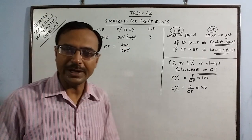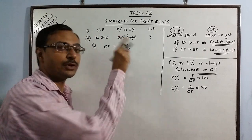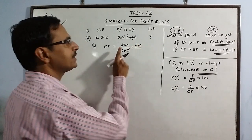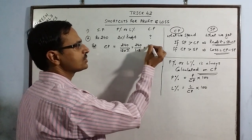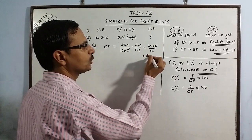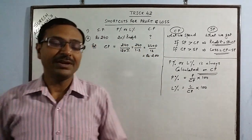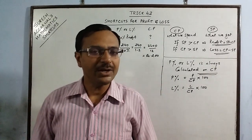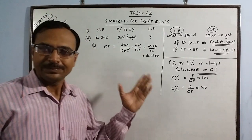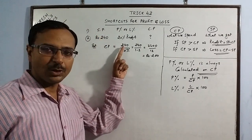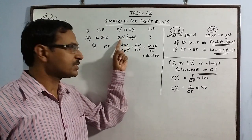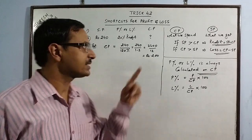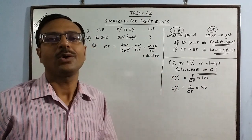Divide by 120 percent — if it is profit, add the percentage profit to 100, so 100 plus 20 gives 120 percent. 120 percent means dividing by 1.2, so this becomes 2400 upon 12, which gives 200. We have calculated the cost price without using any formula. The shortcut: write the selling price in the numerator, add the profit percent to 100, convert to decimal, and divide — giving the cost price in a single step.